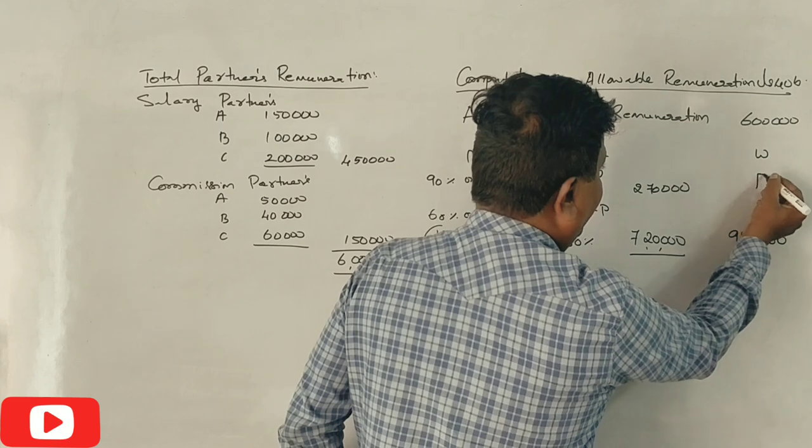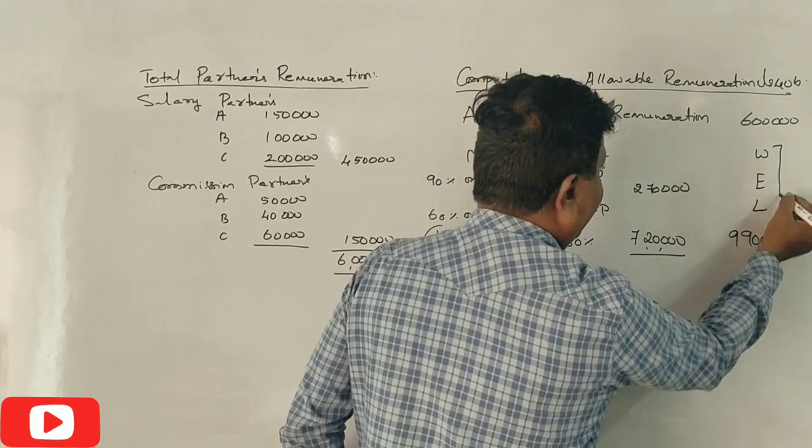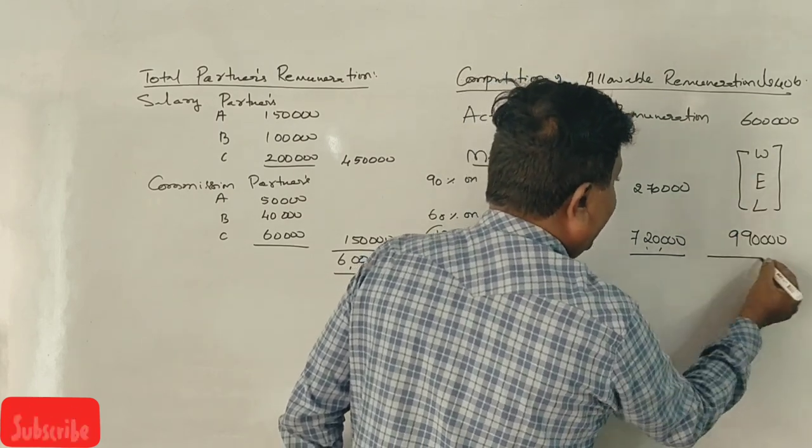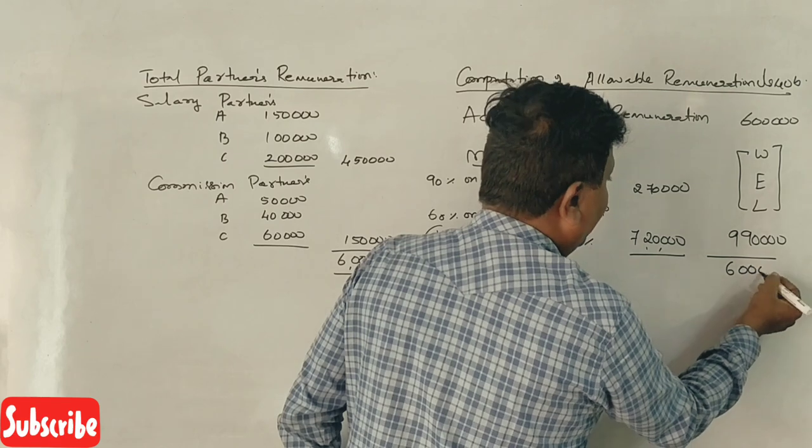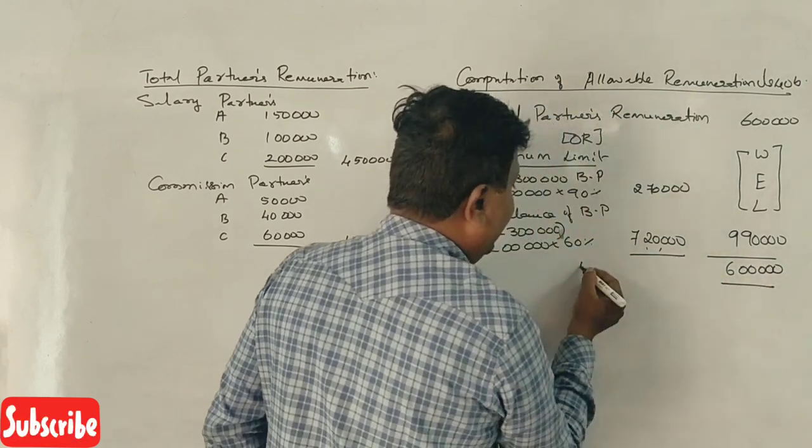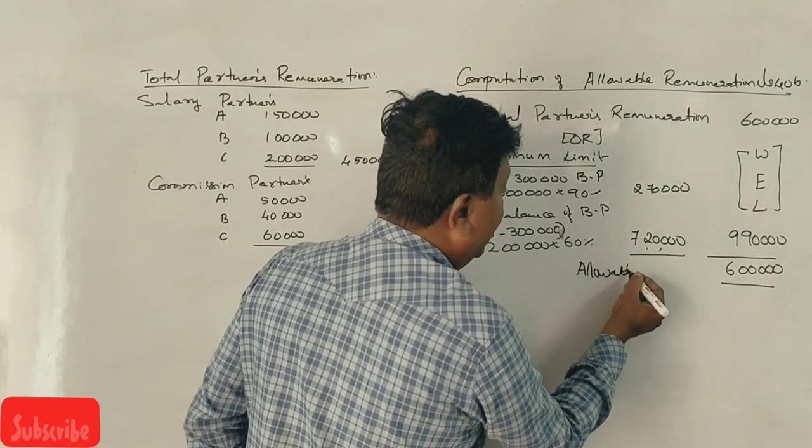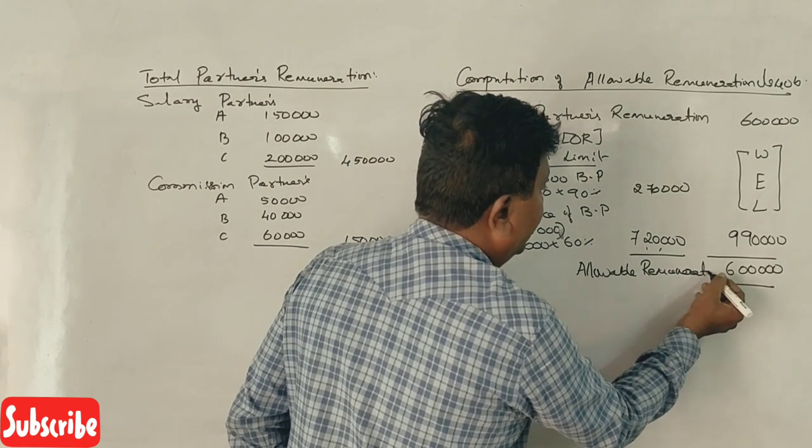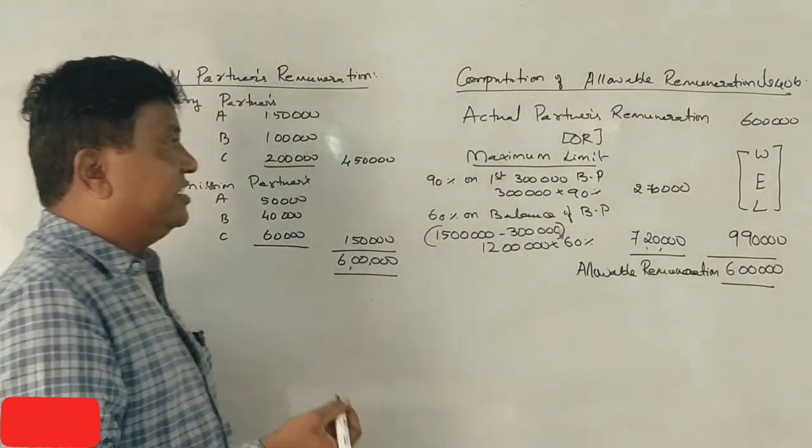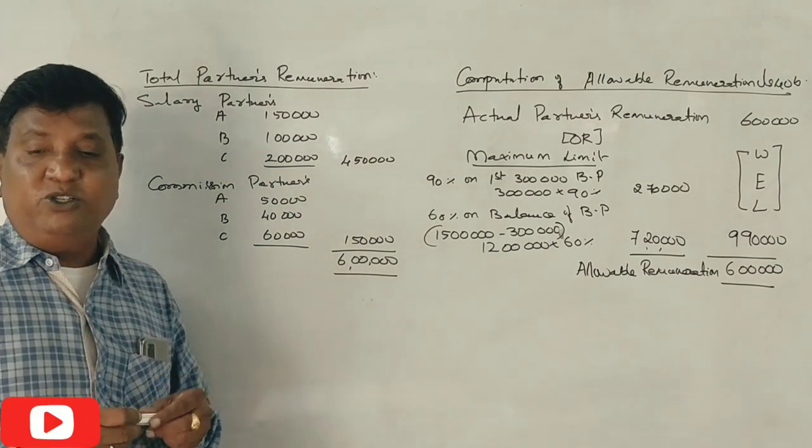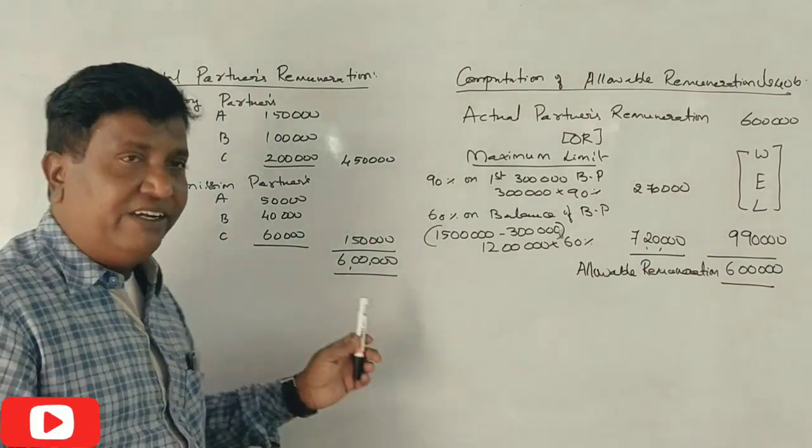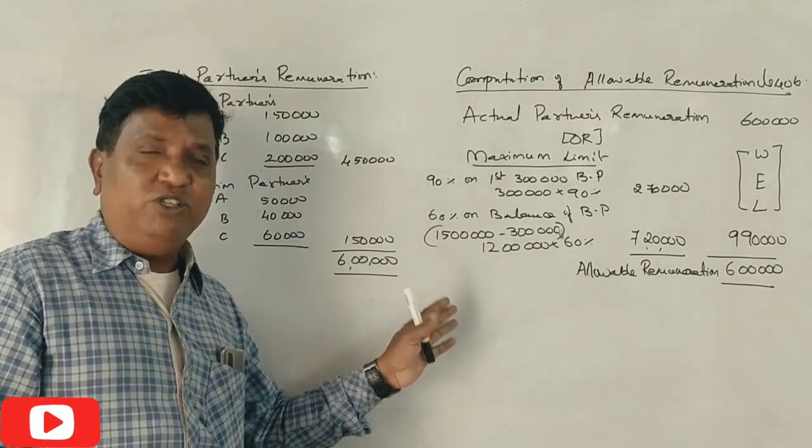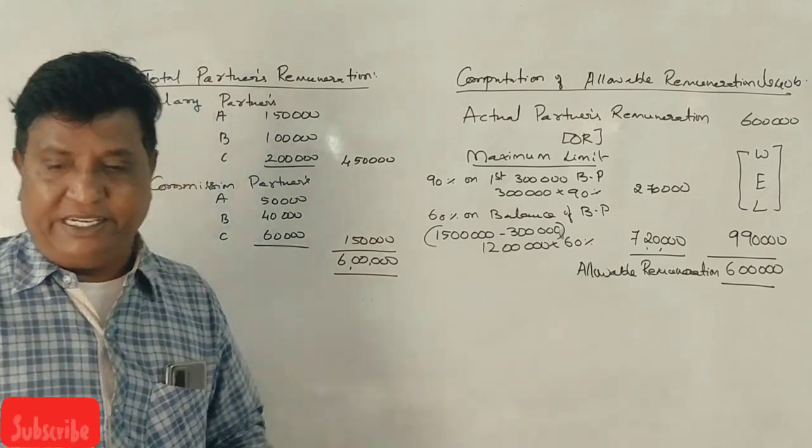Whichever is lower is 6 lakh rupees. That is allowable remuneration. Clear? This is 5,90,000 rupees. This is just six marks.